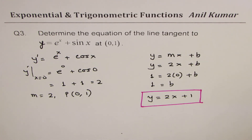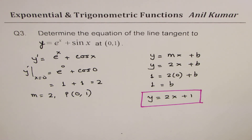So I hope with this you had good practice on finding the equation of tangent lines to trigonometric and exponential functions. I'd like you to take some examples on rate of change and optimization of these functions, and prepare for your final test on calculus. All the best! If you like and subscribe to my videos, that'd be great — feel free to share your views and comments.